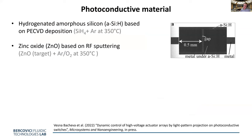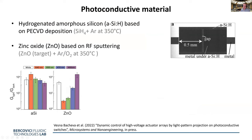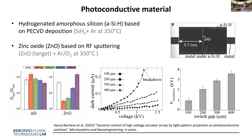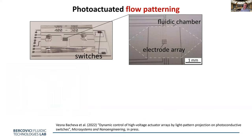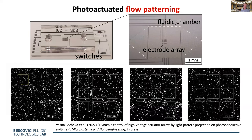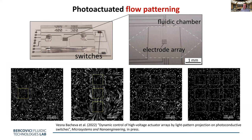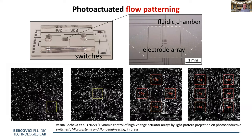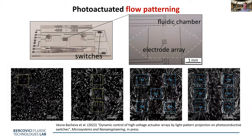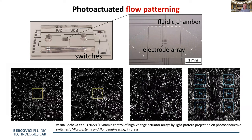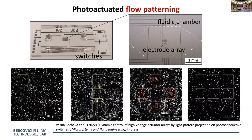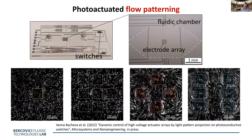There are two main photoconductive options: amorphous silicon and zinc oxide. Both work well — amorphous silicon is more wavelength-sensitive, which is advantageous if you want to image with one wavelength and actuate with another; zinc oxide is broader spectrum. The current demonstration is still a small three-by-three array, entirely controlled by illumination — each electrode switched on or off by an LED. We're now working on expanding this to create a high-resolution electroosmotic flow device.